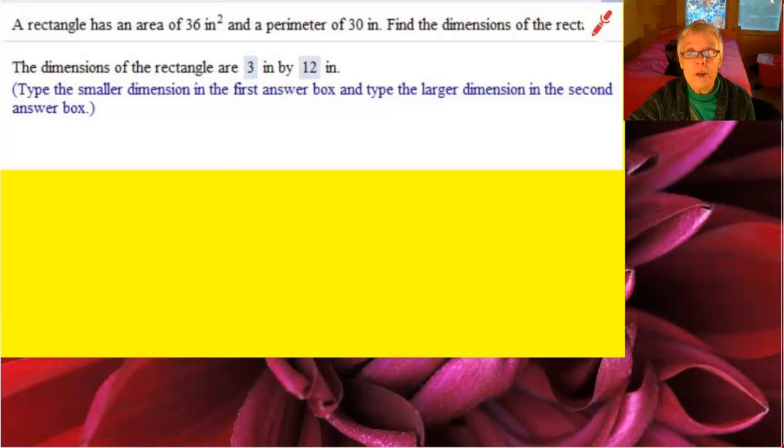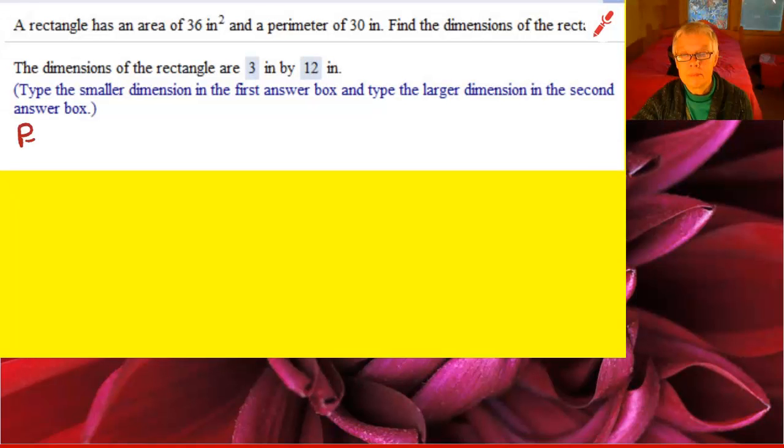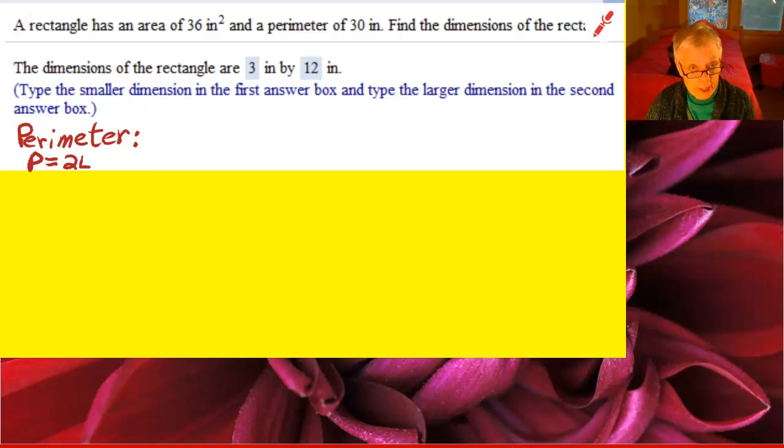So we're going to be working with a rectangle with its length and with its width. Clearly we're going to be dealing with perimeter and area because that's the information we were given. The perimeter of a rectangle equals twice the length plus twice the width. And we're told that the perimeter is 30, so 30 equals 2L plus 2W.